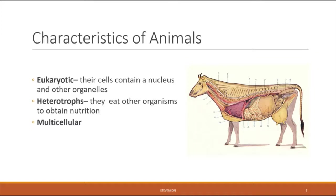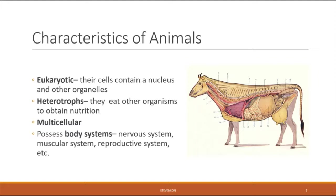Animals are also multicellular, meaning that their bodies are composed of more than one cell. Something unique about animals is that they possess body systems — systems of structures or organs that work together to perform a specific purpose, such as the nervous system, the muscular system, the reproductive system, and the skeletal system.